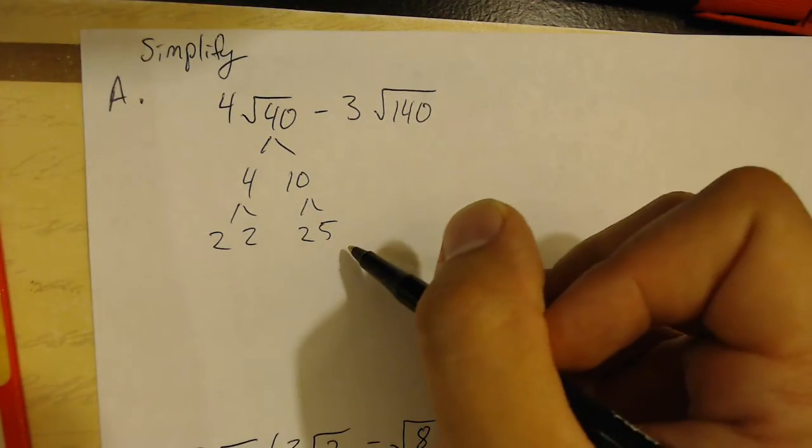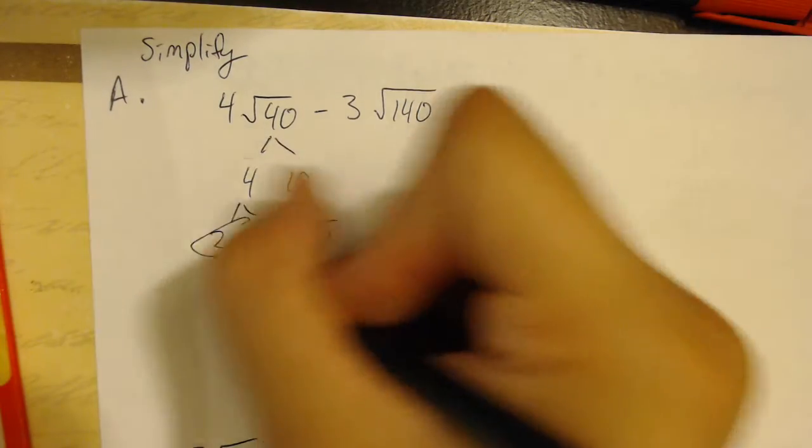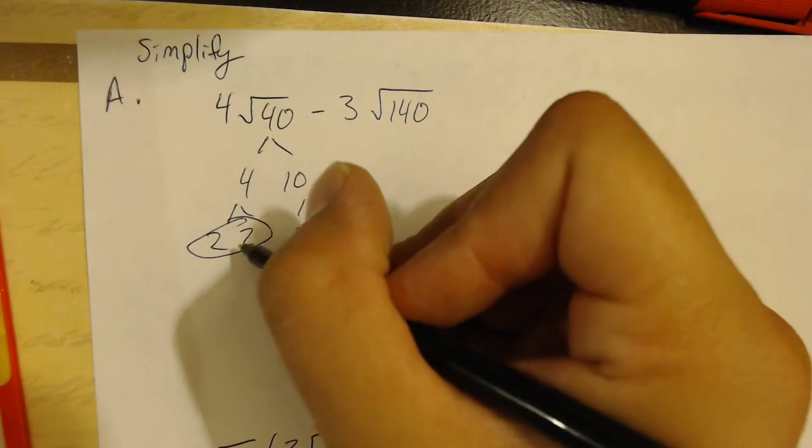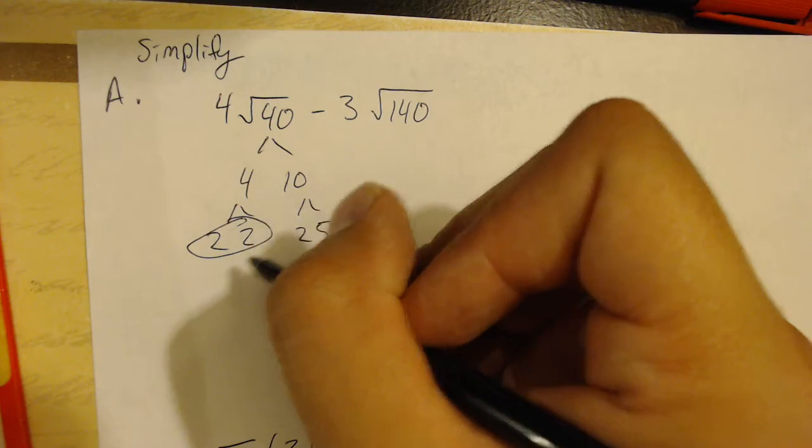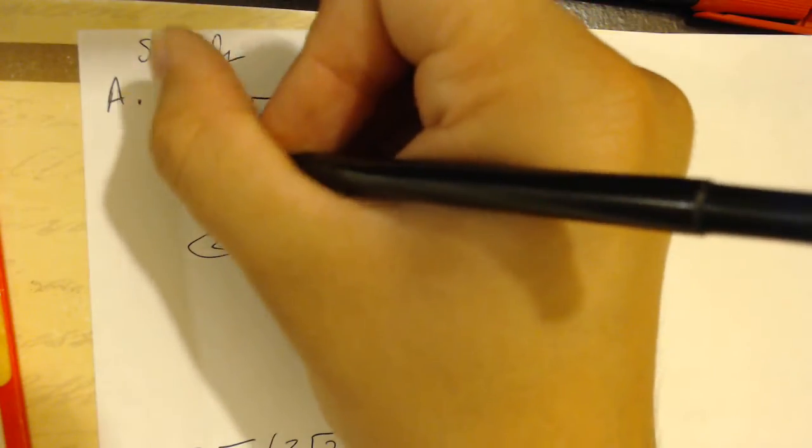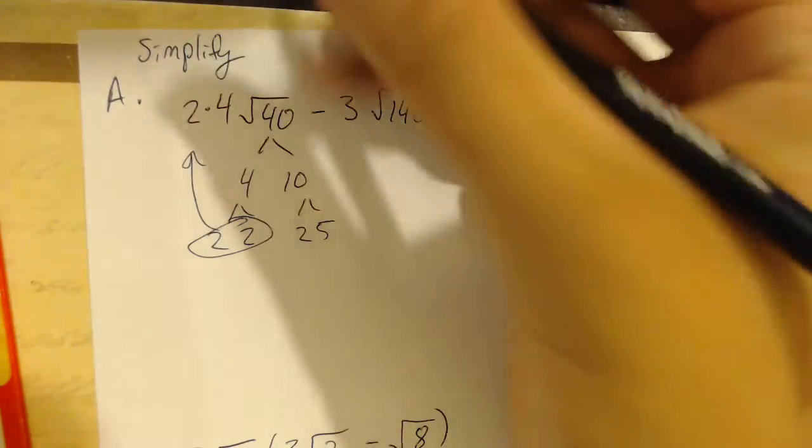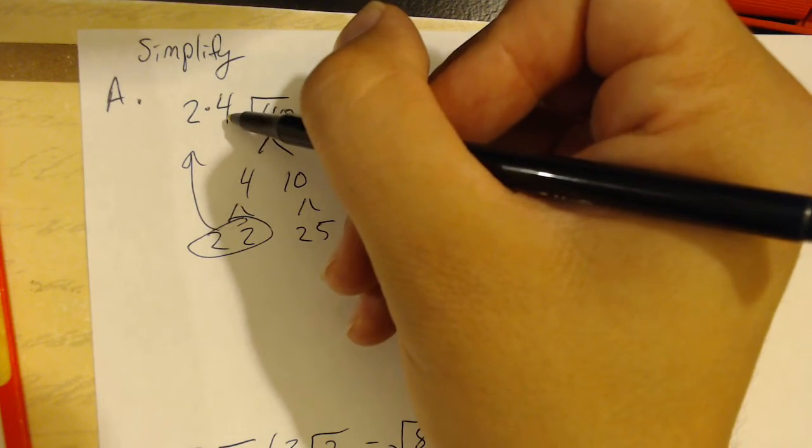Once we're down to all of our prime numbers, we're going to start circling pairs. We've only got one pair. Each pair becomes a whole number on the outside, and it gets multiplied by any whole numbers already out there.